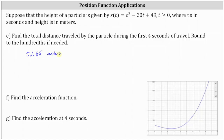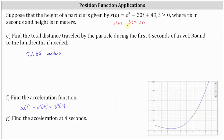Finally for part f, we're asked to determine the acceleration function. The acceleration function is the second derivative of the position function or the derivative of the velocity function. We already found the velocity function, which is equal to 3t squared minus 20. Therefore the acceleration function a of t equals the derivative of the velocity function, which is equal to 6t.